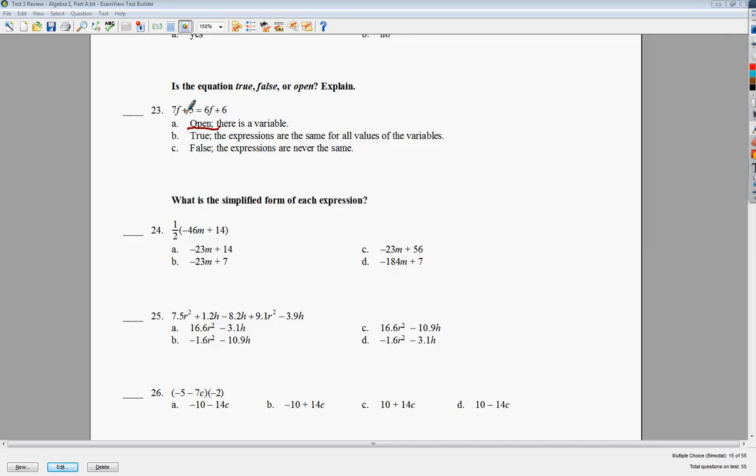The next one says, what's the simplified form of expression? Basically, they want you to do the distributive property. So they want you to do 1 half times negative 46, which would be negative 23m. And then they want you to do 1 half times 14, and you get 7. So negative 23m plus 7. You see I actually wrote it next to the answer. So the answer to number 24 is B.